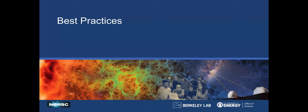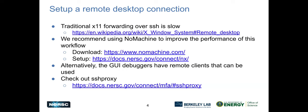Some of the quick best practices before you want to get started with the debuggers is you're going to want to set up a remote desktop connection. Traditionally, X11 forwarding over SSH is quite slow. So we recommend using no machine to improve the performance of that. You can download it and set it up using our documentation here. Alternatively, a lot of the GUI debuggers also have remote clients. So you could install that on your laptop or your desktop and then connect to Perlmutter using those. And if you're going to do that, I suggest checking out SSH proxy, which allows you to set up an SSH key that'll last for an entire day. So you don't have to SSH in multiple times using your multi-factor authentication.